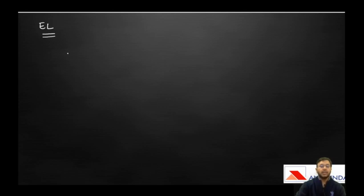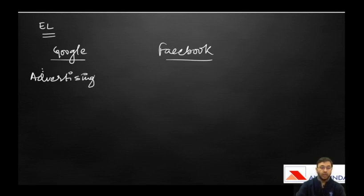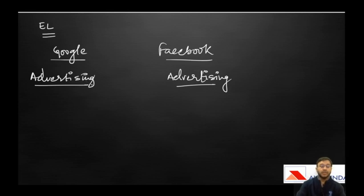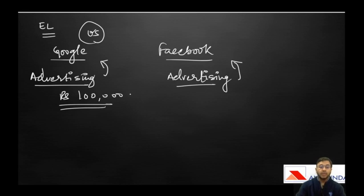Equalization Levy is a concept that originated in Europe. Companies like Google and Facebook are American companies that charge a lot of money for advertising. Companies, NGOs, and others advertising on these platforms pay large amounts, and since Google and Facebook are US-based, all that money goes to the US directly.